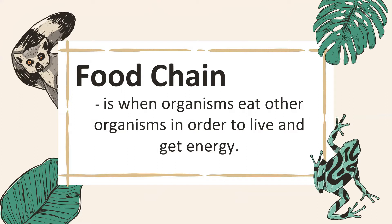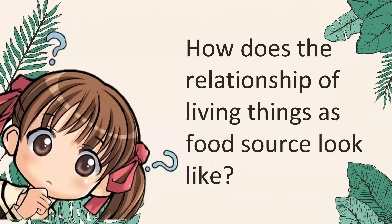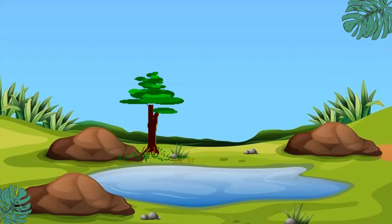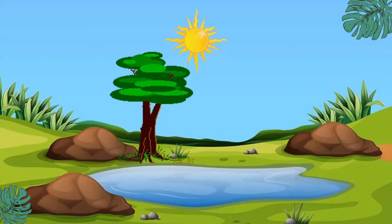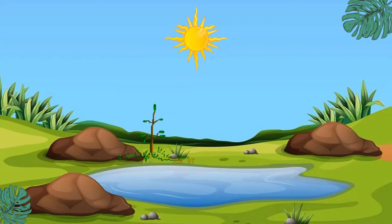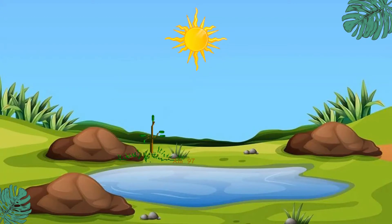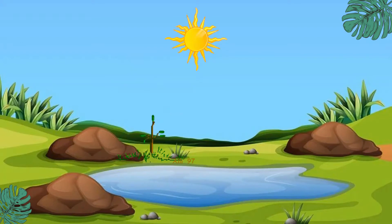What is a food chain? It is when organisms eat other organisms in order to live and get energy. A food chain starts from plants that get light energy from the sun and use it to make their own food. They keep this food as starch in different parts of their body.